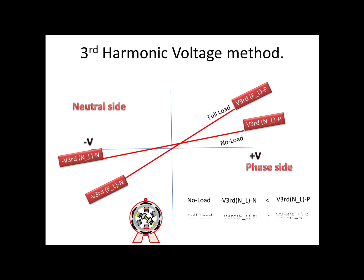One VT is on the neutral side and another on the phasor side. We are going to see two conditions: one is no load and another is full load condition. On no load, the third harmonic produced is very lesser in the generator. When the generator is connected to full load, then the third harmonic voltage gets higher than the no load condition.